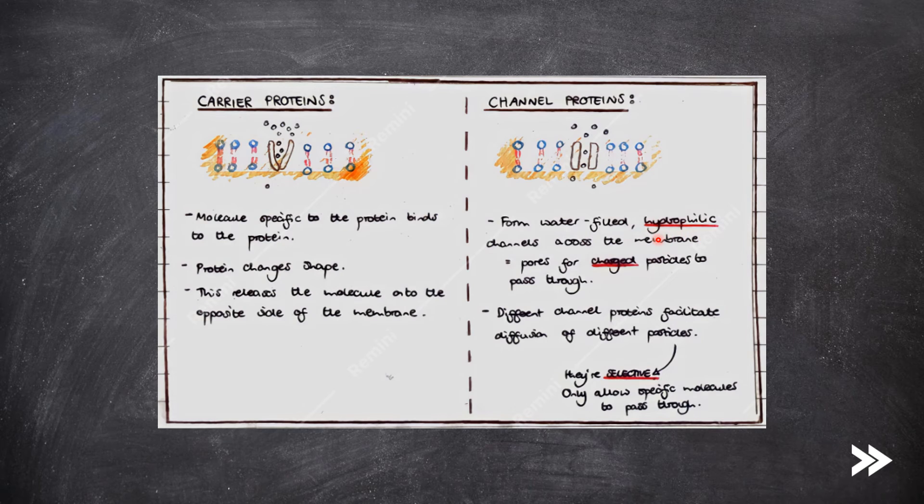Channel proteins form water-filled hydrophilic channels across the membrane, hydrophilic meaning that they like water, hydro water, philic liking. This creates pores for charged particles to pass through. Different channel proteins facilitate the diffusion of different particles, i.e. they're selective. They only allow specific molecules to pass through.